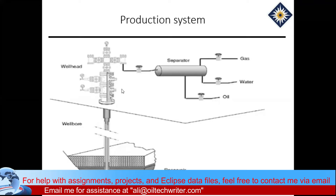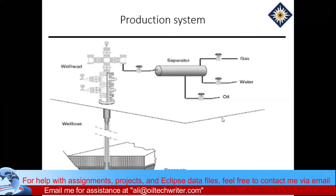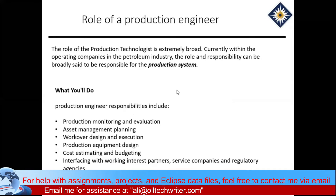For now, understand that this is the major production system diagram. If we do a midterm or final, you will see this diagram somewhere in an exam. The production system contains: reservoir, wellbore, tubings, christmas tree, flow lines, and treatment facilities. Now, what is the job of the production engineer?